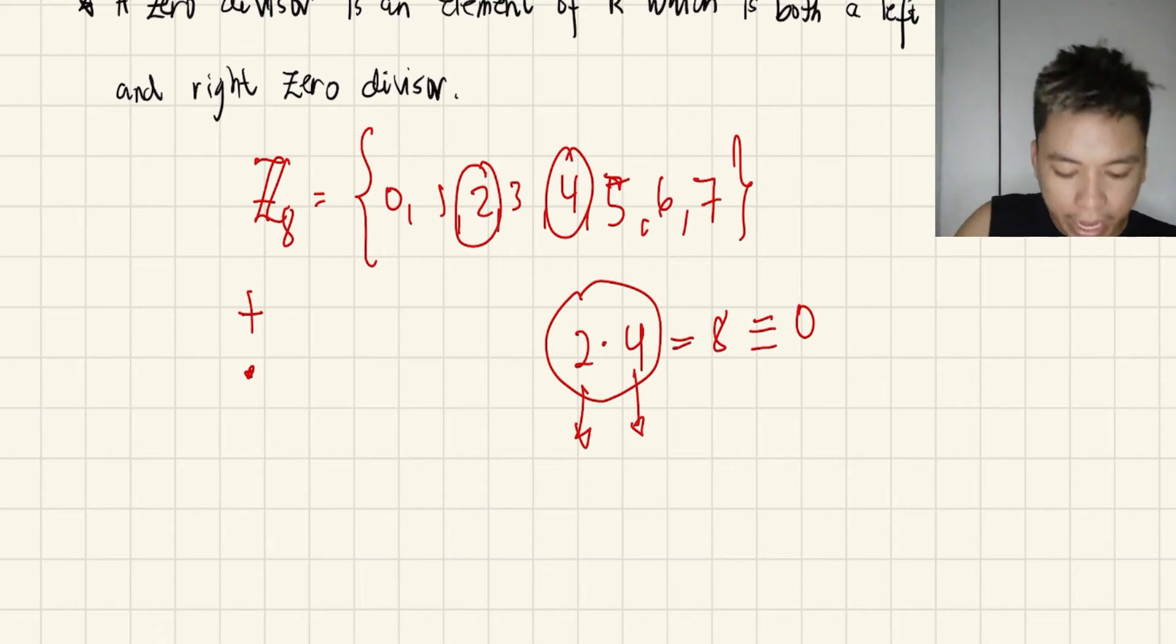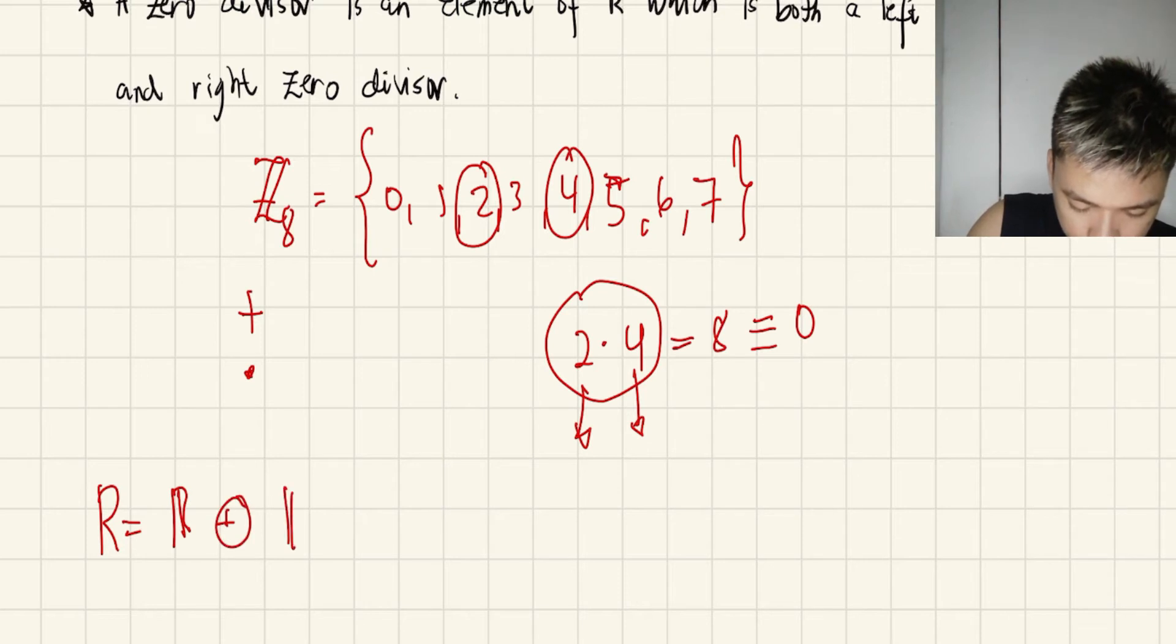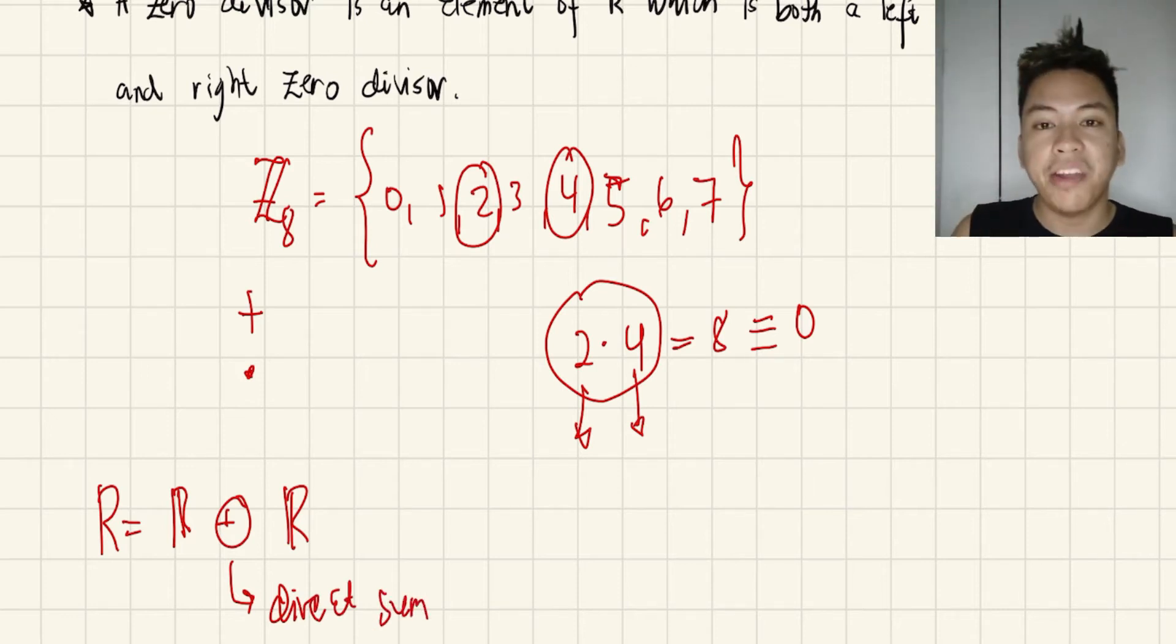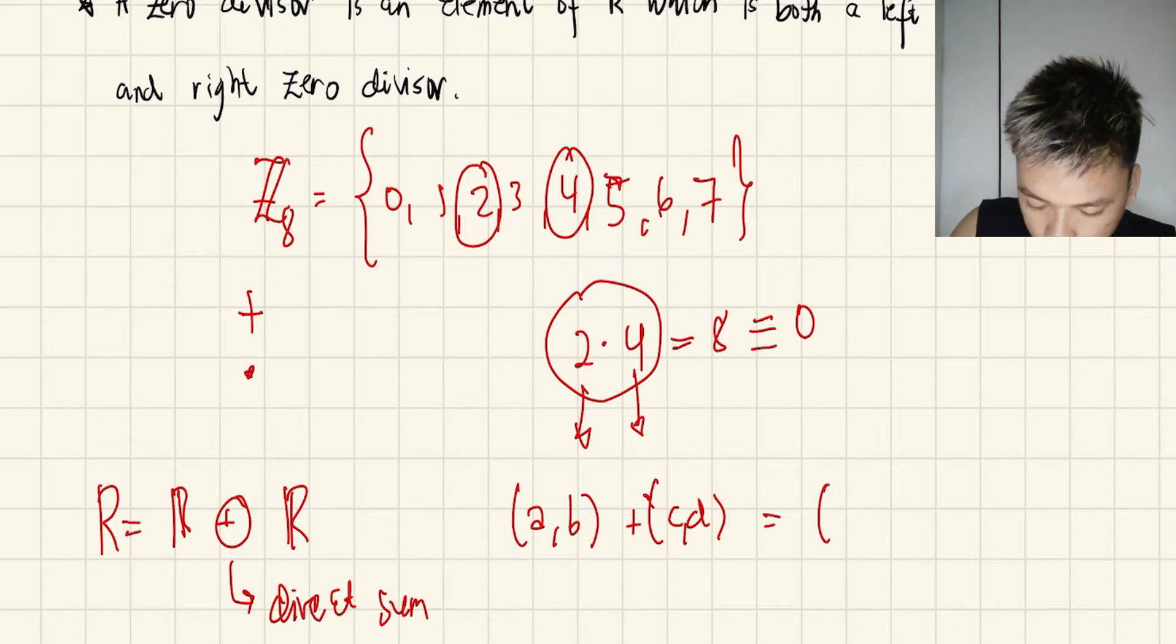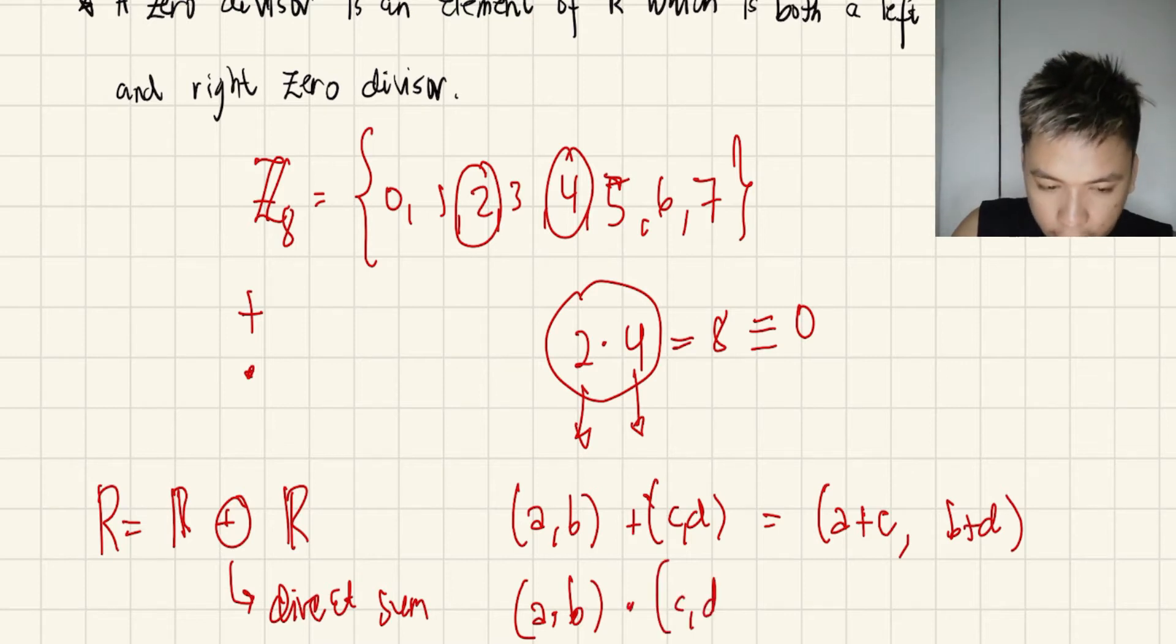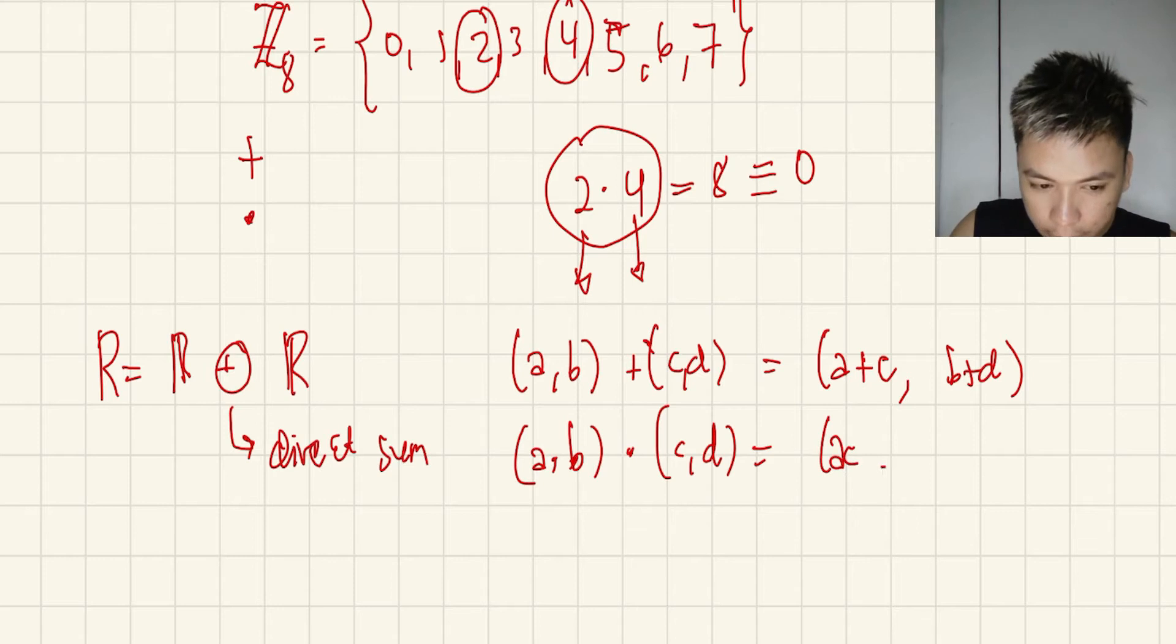Now, let's say our R is this one: the direct sum of the set of real numbers and another set of real numbers. We define this by: if we're going to get the sum of (a,b) and (c,d), you only have to add entry-wise, so that's going to be (a+c, b+d). And if you're going to get the product of (a,b) with the ordered pair (c,d), that's going to be (ac, bd), entry-wise.